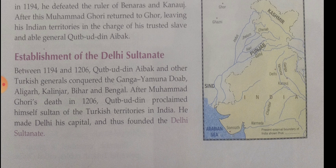Muhammad Ghori defeated the ruler of Kannauj and his generals further expanded the Turkish territories in North India. After Muhammad Ghori's death in 1206, his general Qutbuddin Aibak became Sultan of the Turkish territories in India and established the Slave dynasty. Iltutmish stabilized the empire and finished building the Qutub Minar, which had been begun by Aibak. Balban, the last great ruler of the Slave dynasty, took stern steps to control nobles and strengthened the empire.